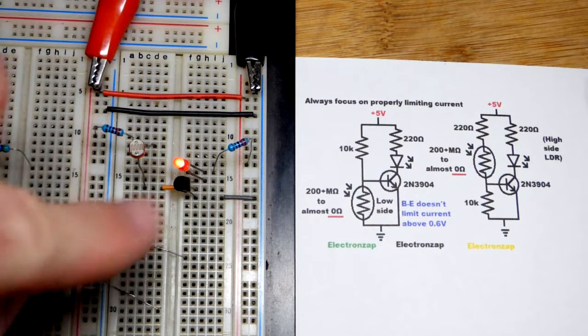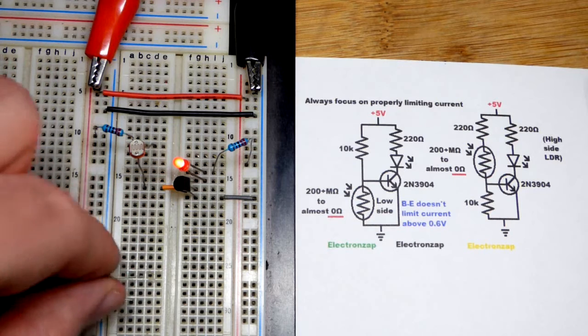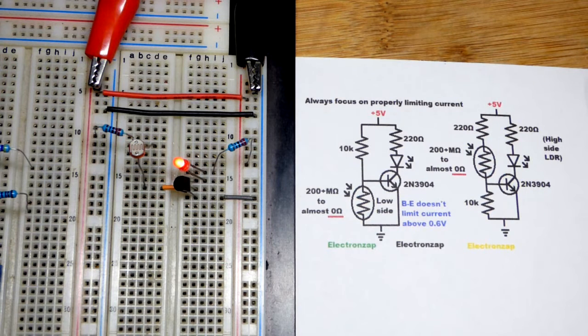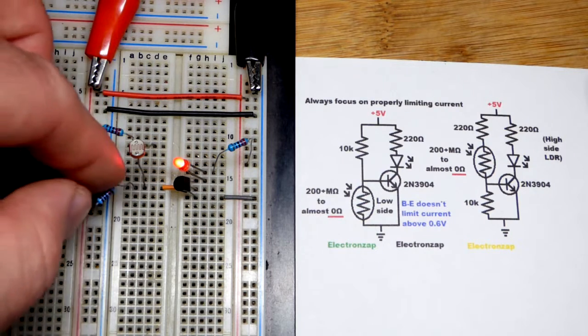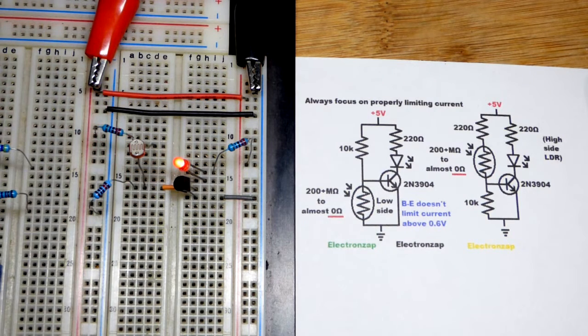And now you can see current's actually flowing through it right now. So if it was bright enough and we just put the light dependent resistor to the positive supply, the current would have flowed unlimited.